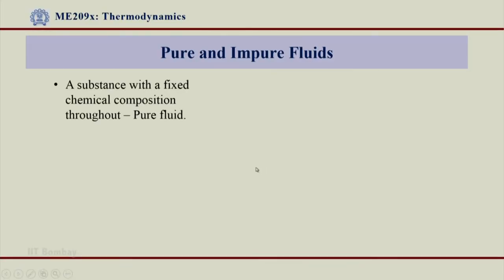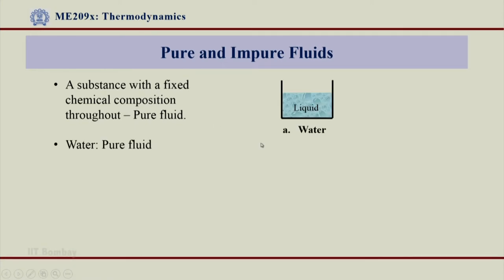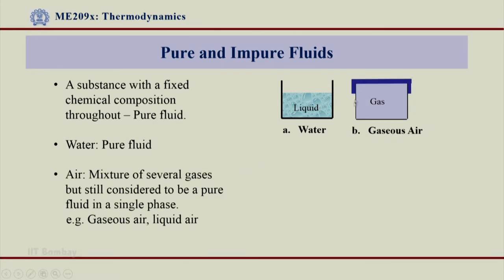A pure fluid is defined as a substance with a fixed chemical composition throughout. For example, water in liquid form is a pure fluid — its chemical composition is H2O. Air, which is a mixture of several gases, is still considered to be a pure fluid when it is in a single phase.